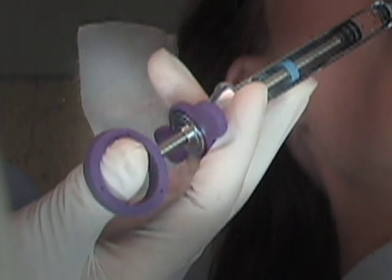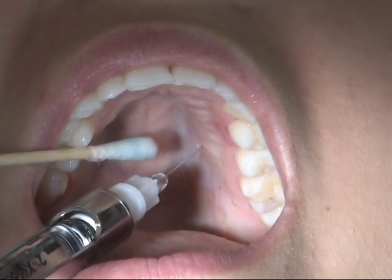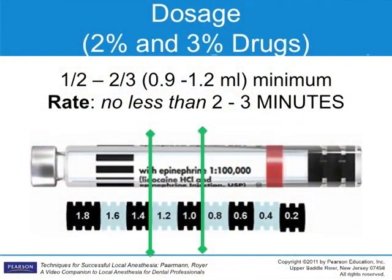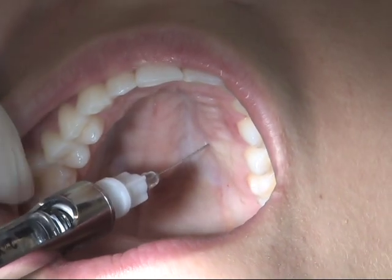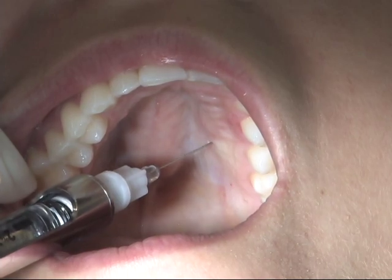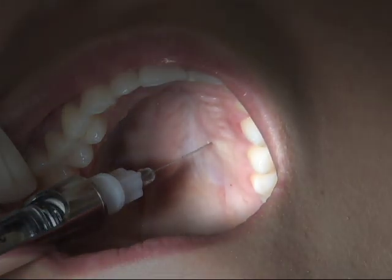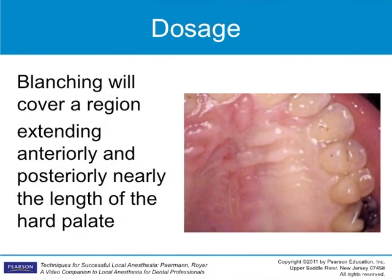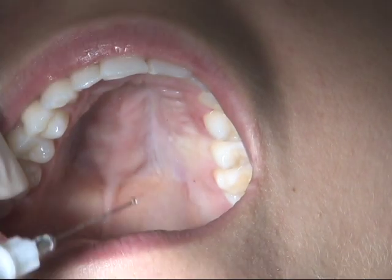Aspirate, being careful not to withdraw the bevel of the needle during aspiration. Deposit approximately 0.9 to 1.2 milliliters of a carpule of a two to three percent anesthetic over a minimum period of three minutes. As the anesthetic is slowly deposited, a blanching pattern should extend both anteriorly and posteriorly. Gently remove the needle and make the needle safe.